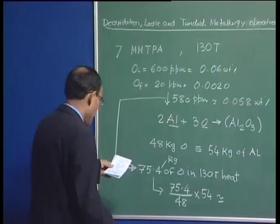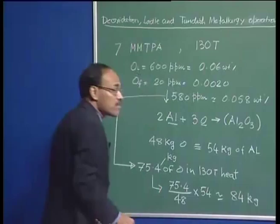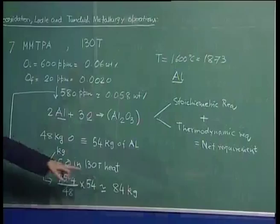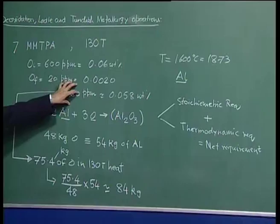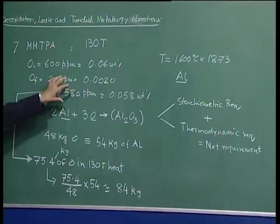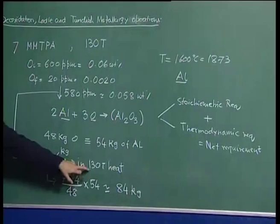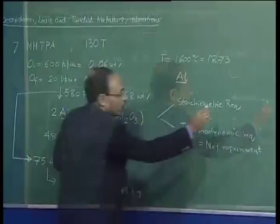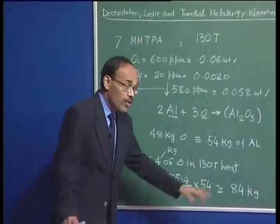On the basis of stoichiometry, 84 kg of aluminum is needed to reduce the oxygen level by 580 ppm in a 130-ton heat. This 84 kg is the stoichiometric requirement, but this is not going to be enough by itself — we also need to calculate the thermodynamic requirement.